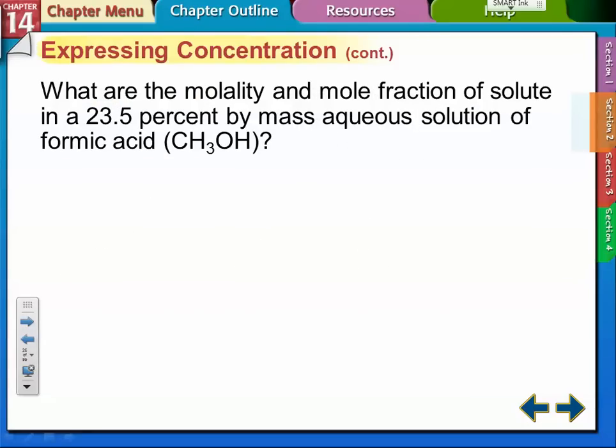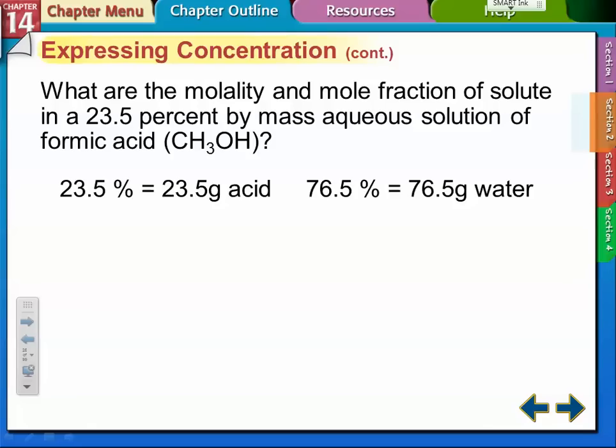This problem came out of the web assigns. You got 23.5 percent by mass aqueous solution of formic acid. What's the molality? If that's the percent, then we're going to say those percents equal the grams. We're going to say we have a hundred grams of it, and then those percents turn into grams. So we got 23.5 grams of the acid and 76.5 grams of water.